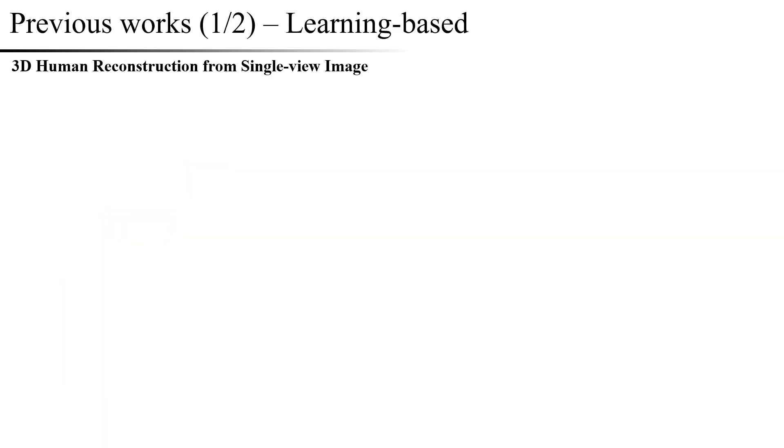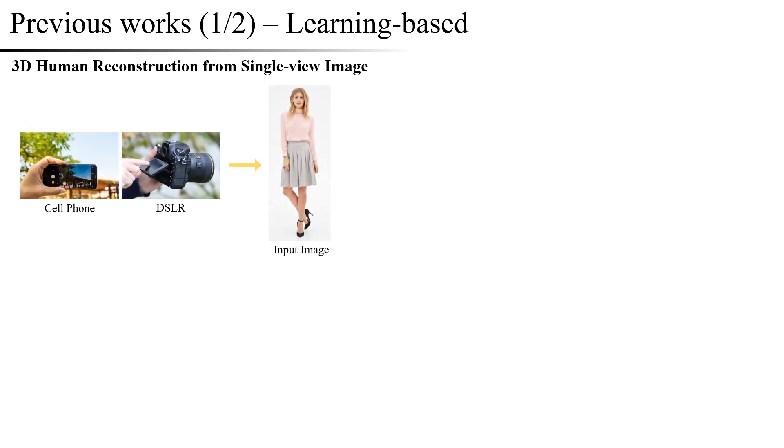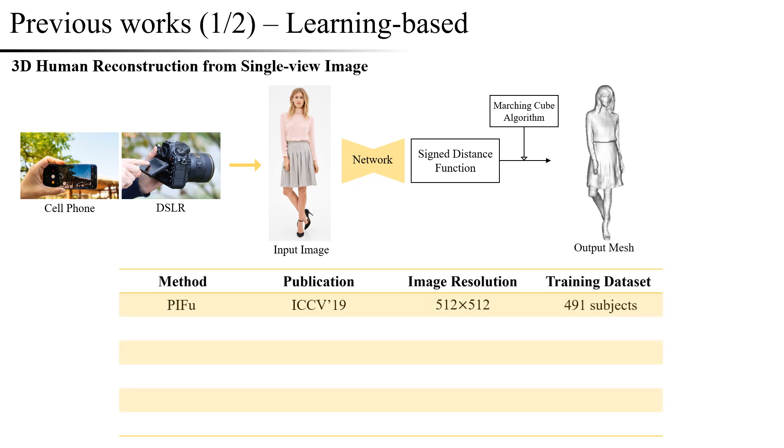The methods of reconstructing a 3D human model from a single image goes through the following process. First, from a photo containing a person, we predict the signed distance function values through a deep learning network, pass it through the marching cube algorithm, and form a 3D human mesh.